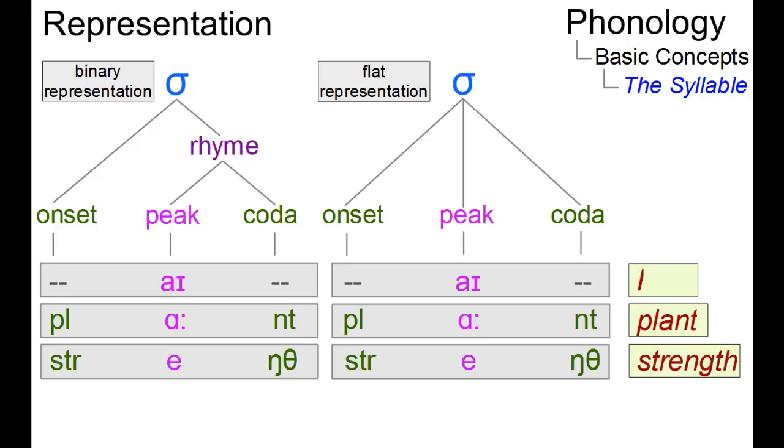Strength exhibits the maximum syllable length in present-day English. It has three consonants in the onset position, a peak and two consonants realizing the coda.